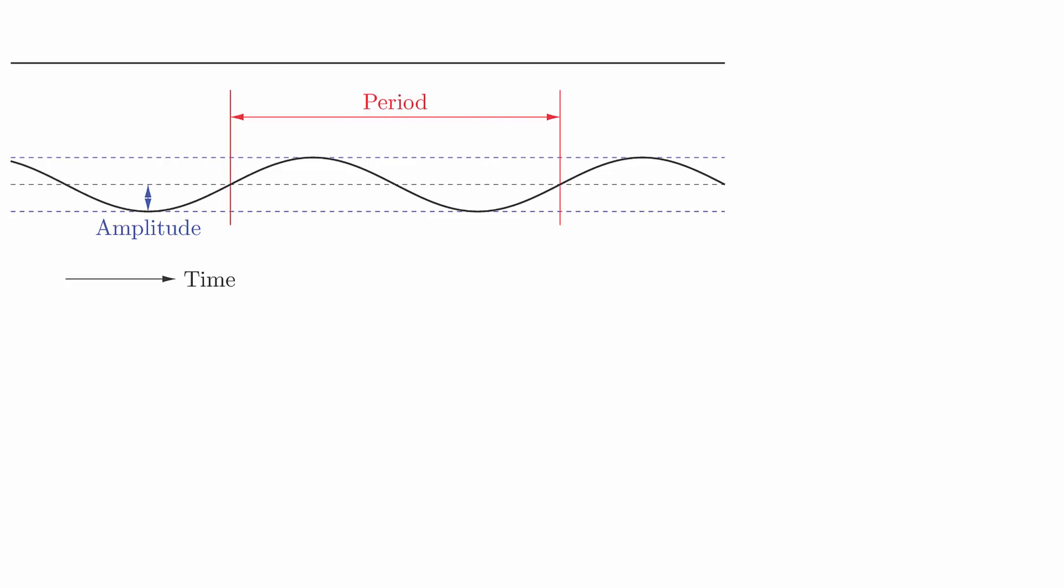Another feature is the period, which is how much time it takes for the motion to repeat itself. One repetition is sometimes called a cycle. The frequency is the measure of how many cycles are completed per second. This value turns out to be the reciprocal of the period.